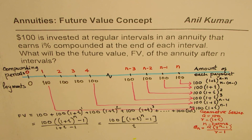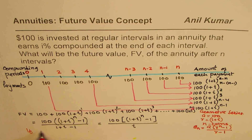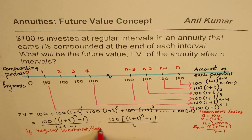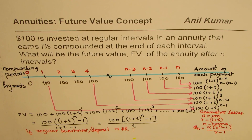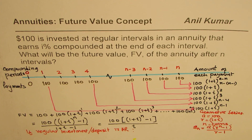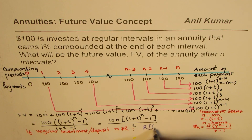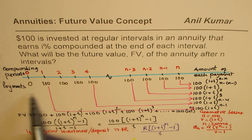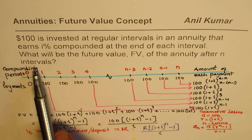This becomes our general formula. If the regular investment or deposit is R dollars instead of $100, we simply replace 100 with R. The general future value formula is: FV = R times [(1 + i)^N minus 1] divided by i. All the deposited amounts will appreciate and that total is the final amount received after N intervals of compounded interest.